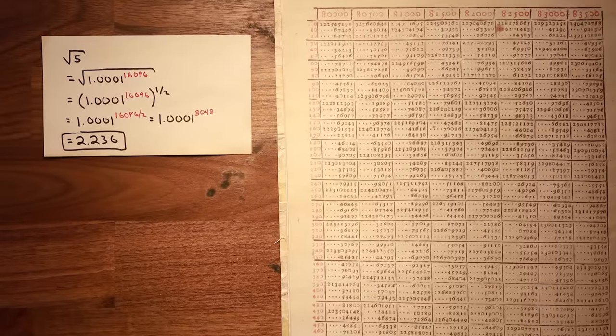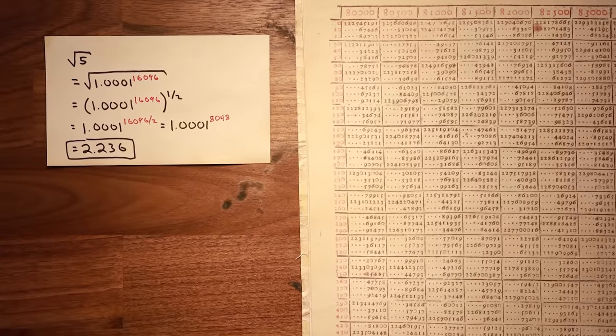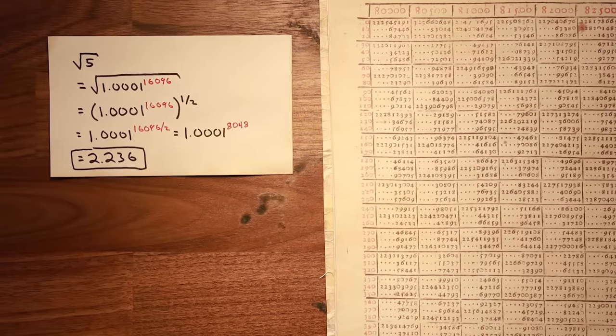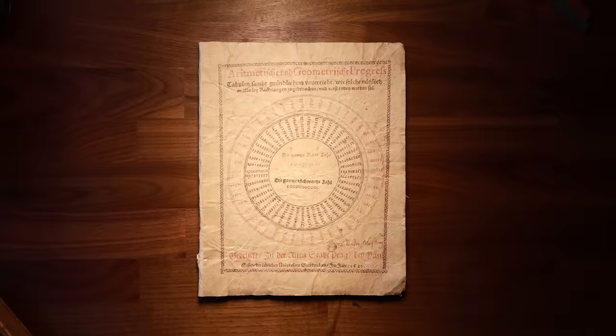So instead of taking a messy square root, the only actual math we had to do was to divide 16,096 by 2. So Berge's table effectively converts roots into division.